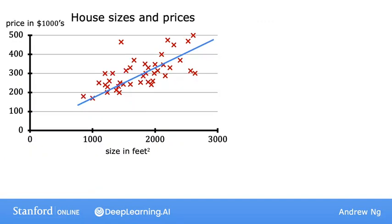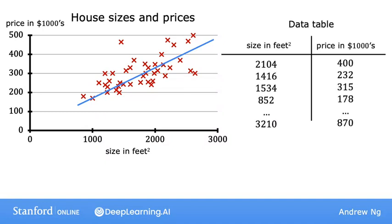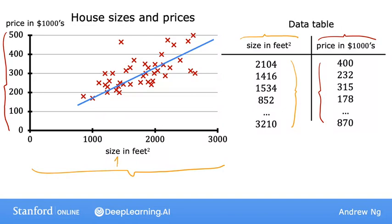In addition to visualizing this data as a plot, there's one other way of looking at the data - a data table. The data comprises a set of inputs, the size of the house, and outputs, the price. The horizontal and vertical axes correspond to these two columns. If you have 47 rows in this data table, then there are 47 of these crosses on the plot.